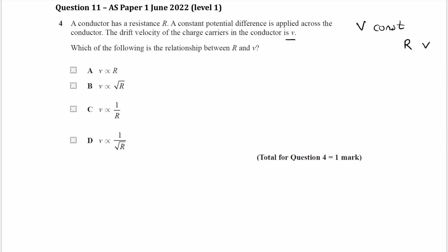We want to work out a relationship between the resistance and the drift velocity. So some equations that link all of the things that we have: we know that V is equal to IR. That relates to the voltage and the resistance.